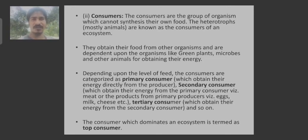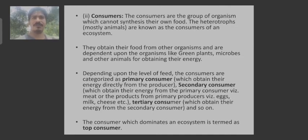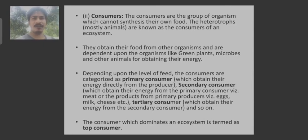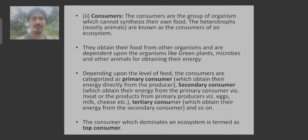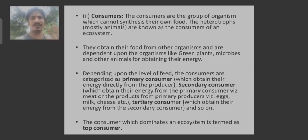For example, the producer is mostly green plants. The primary consumer is a grasshopper feeding on the plant. The grasshopper is eaten by the frog, so the frog becomes the secondary consumer. The frog is eaten by the snake, so the snake becomes the tertiary consumer. The consumer which dominates the ecosystem and is not eaten by any other organism is termed the top consumer.